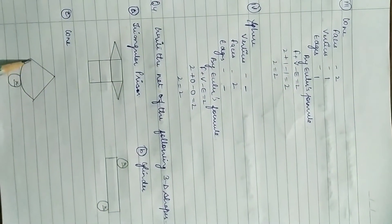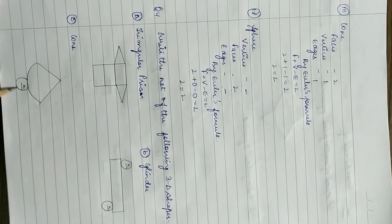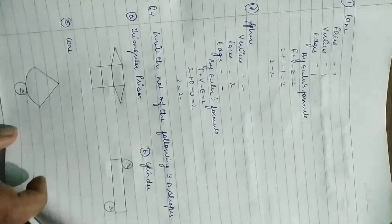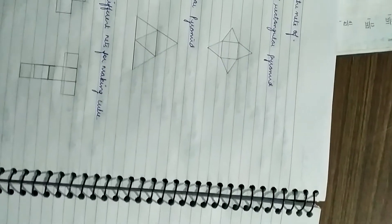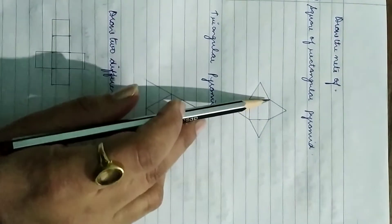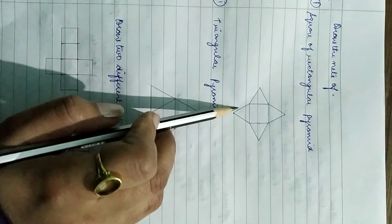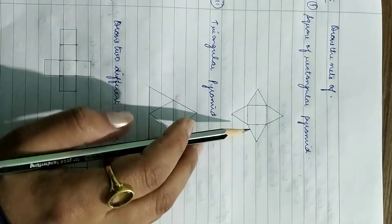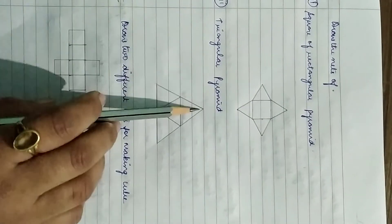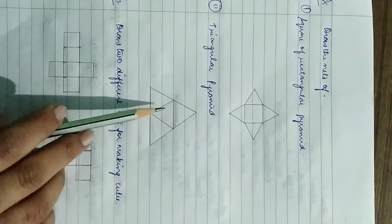For a cone, draw a sector and then a small circle, marking the radius r, since the cone's slant and base have different radii. For a square or rectangular pyramid, draw a square of any dimension (e.g., 2 or 4 cm) with four triangles of equal size around it. For a triangular pyramid, draw one equilateral triangle with a smaller triangle inside it.